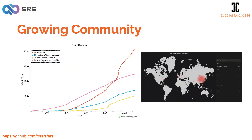I started SRS back in 2013, and it initially supported RTMP, HTTP FLV, and HLS. Then in 2015, I added support for live streaming clusters. And finally, in 2020, I brought in support for SRT and WebRTC. If you compare SRS to other open source projects, you'll see that NGINX-RTMP is mainly a live streaming server, while Janus and MediaSoup are WebRTC SFU servers. But SRS is the most popular project with the most stars on GitHub, and it's used worldwide with an active community contributing to it.